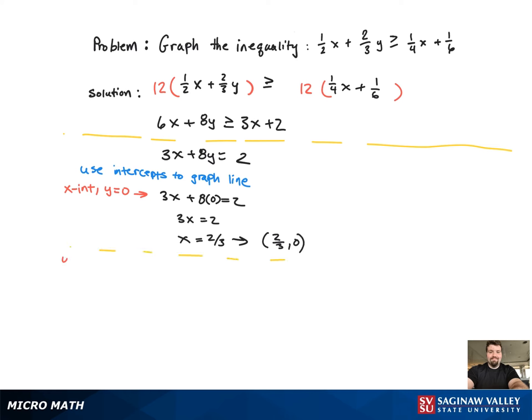Now we need the y-intercept. Divide both sides by 8, and you get y equals 1 fourth. That corresponds to the point 0 comma 1 fourth.